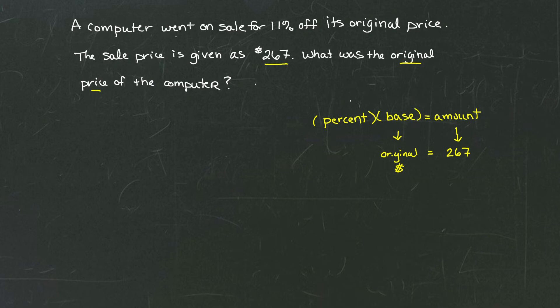Finally, we have our percent. And we're really tempted right away to put 11% in there. But let's read the problem a little closer here. A computer went on sale for 11% off its original price. That means that $267 represents a discount of 11%.